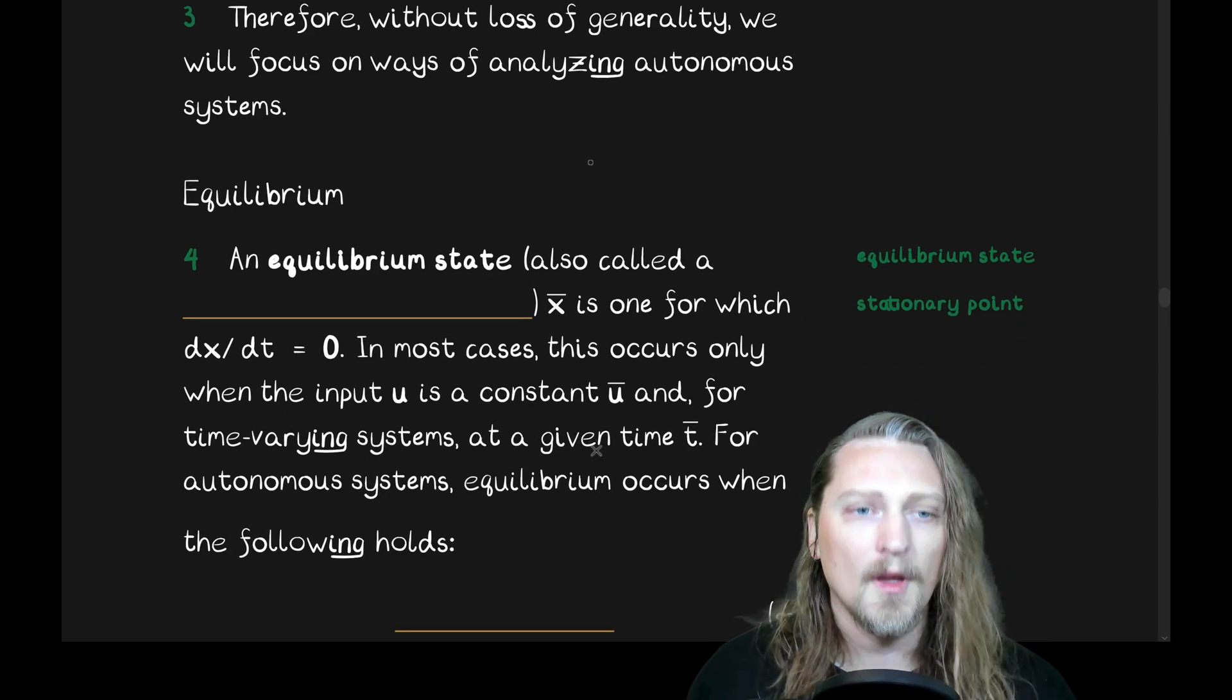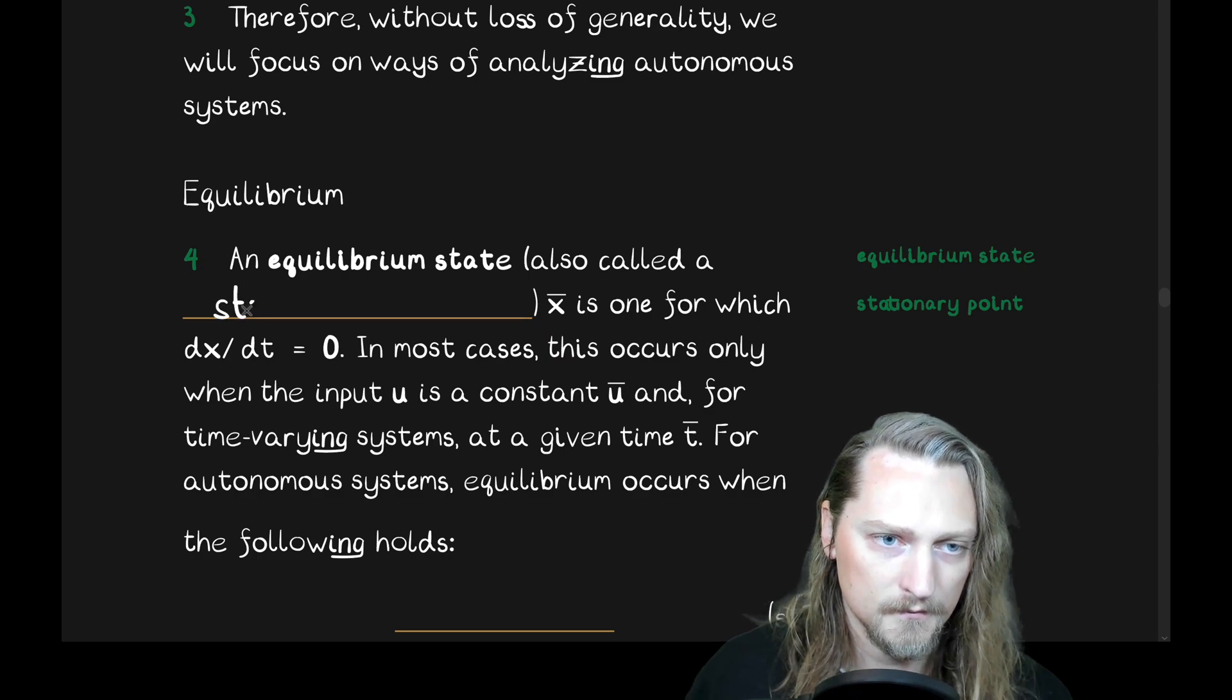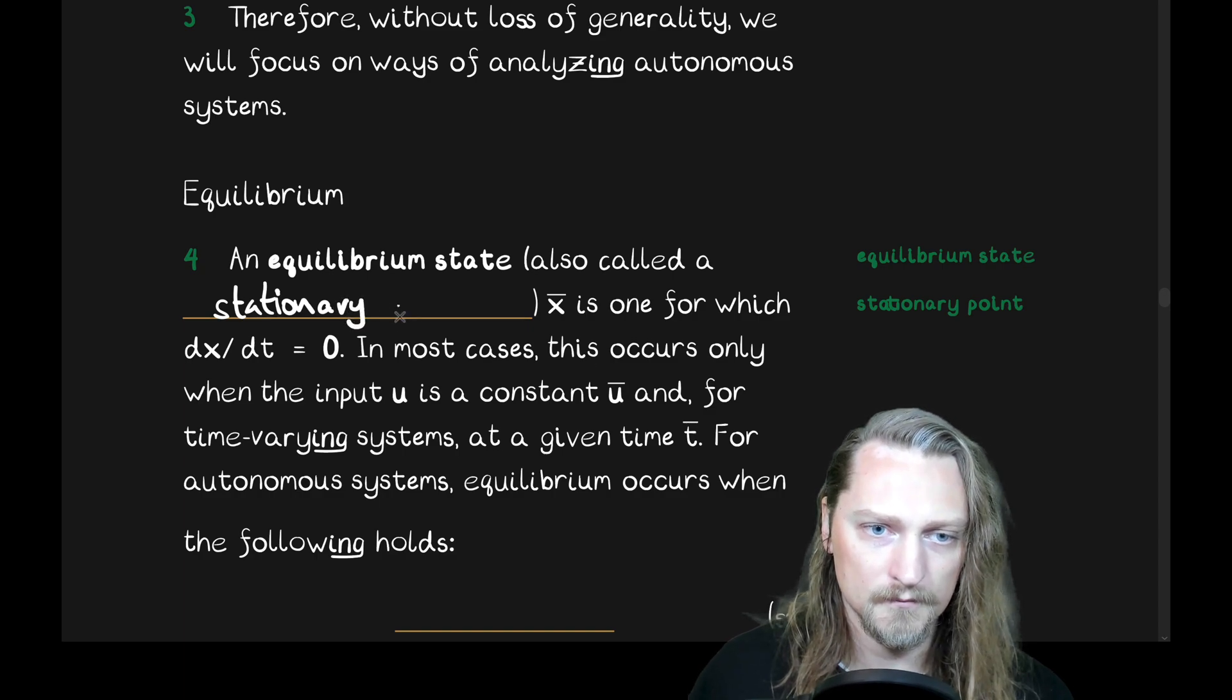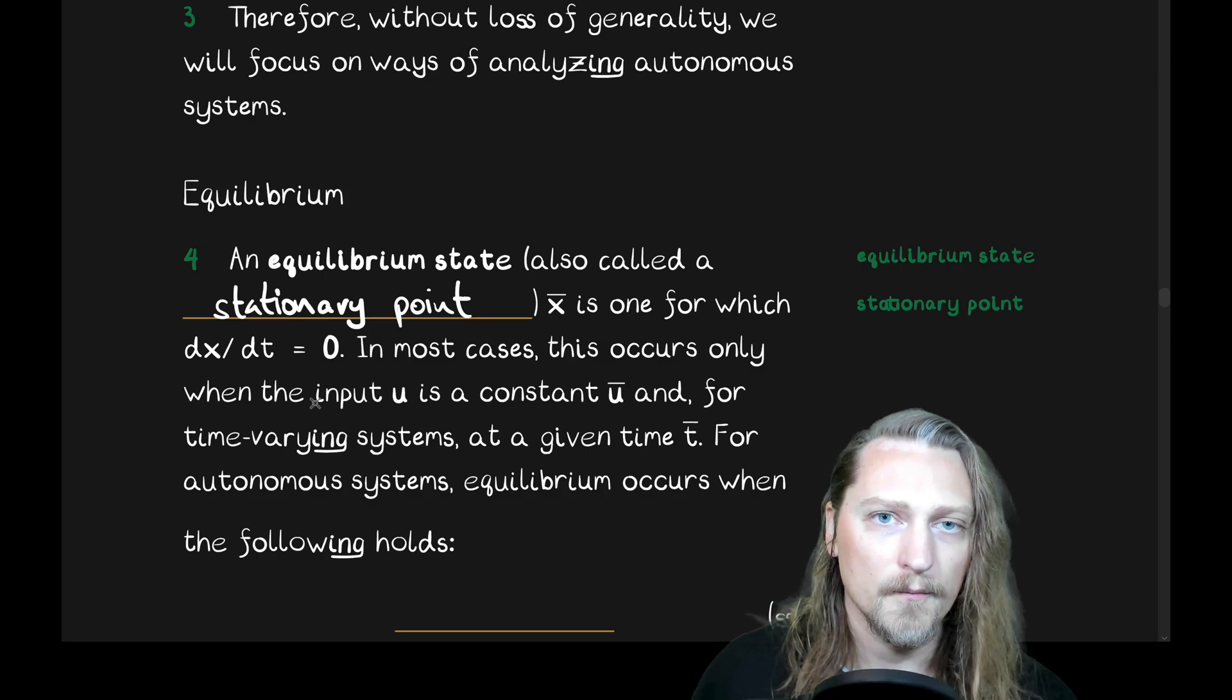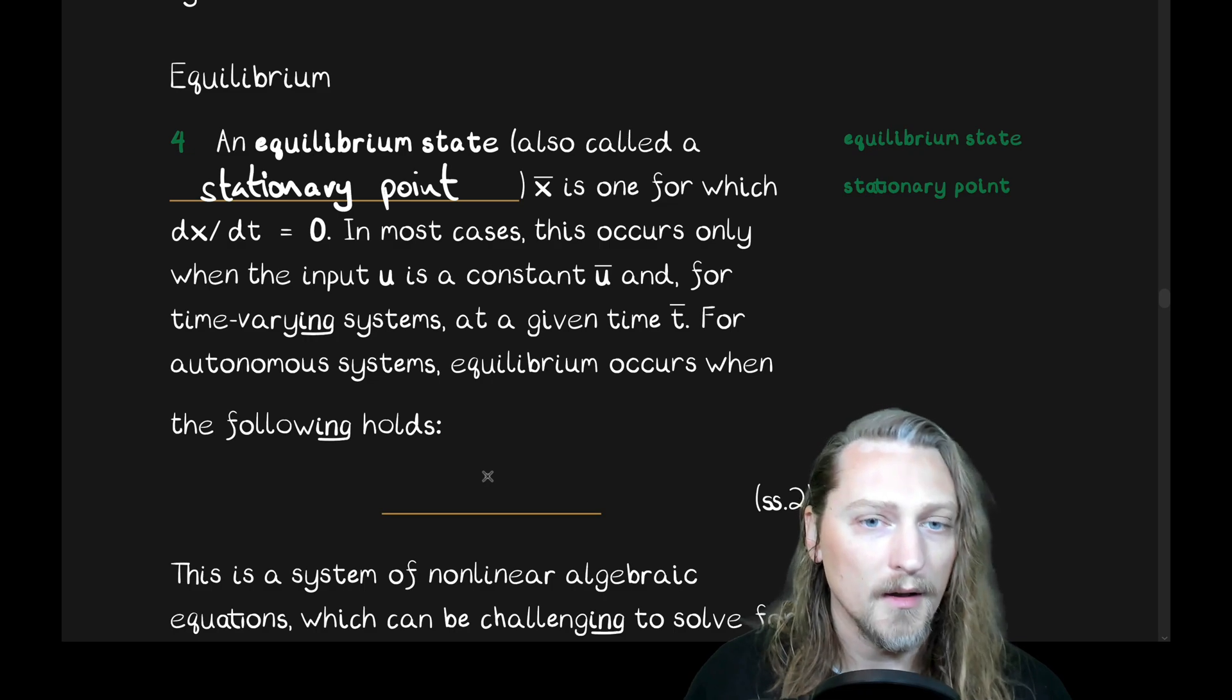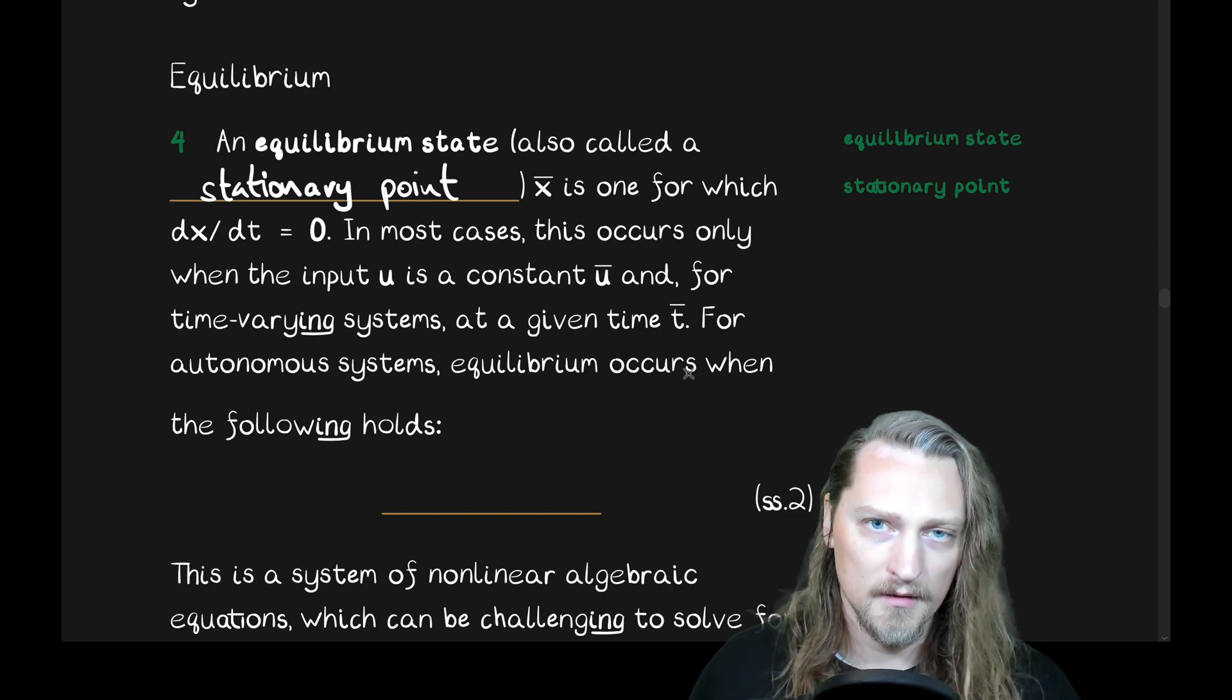Equilibrium. An equilibrium state, also called a stationary point, and you'll see both of these terminologies. X bar is one for which the time rate of change of x is the zero vector. In most cases, this occurs only when the input u is a constant, call it u bar, and, for time-varying systems at any given time, t bar.